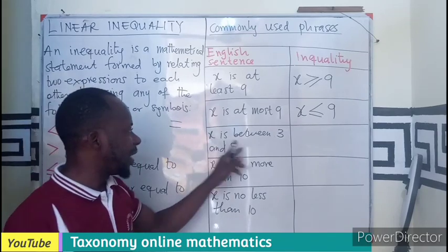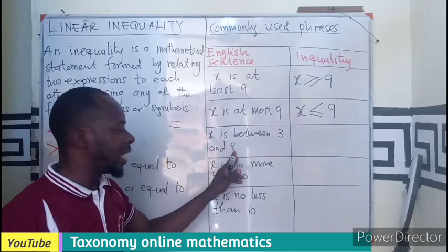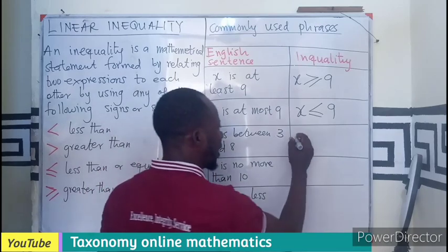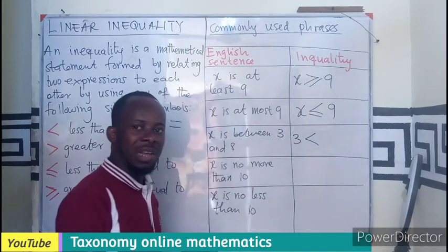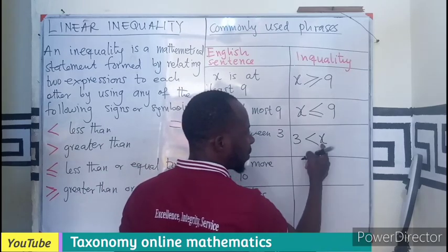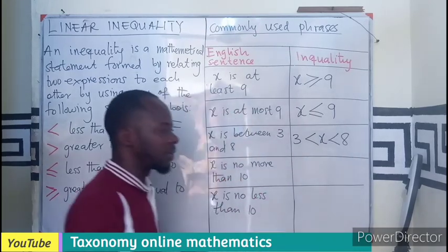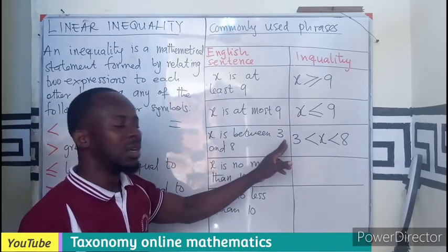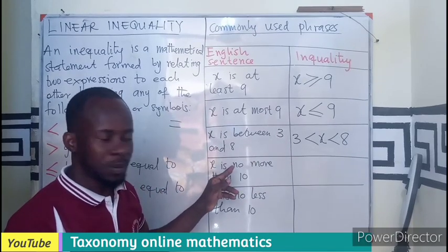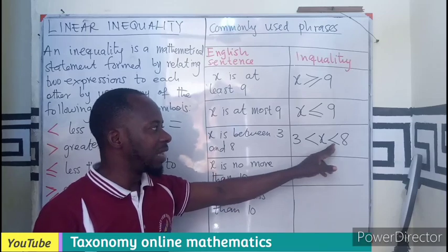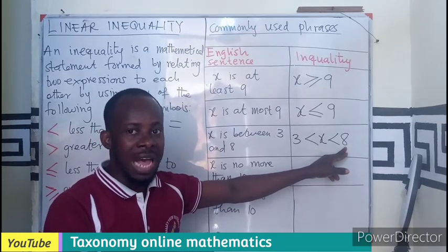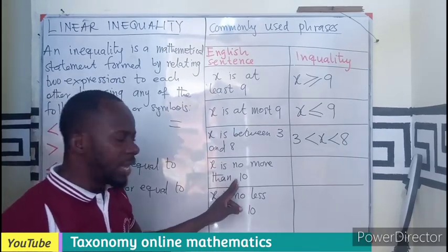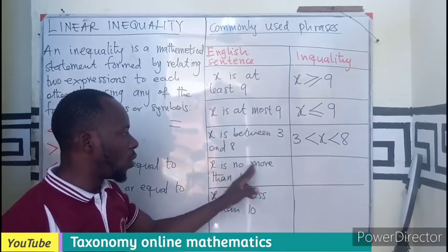If x is between three and eight, the values of x would be four, five, six, seven. We write this as a compound inequality: three is less than x, and x is less than eight. So we can list the values four, five, six, seven as the values in between.